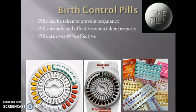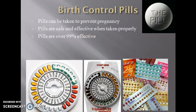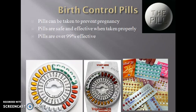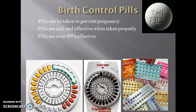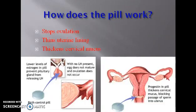Let's look at birth control pills. Birth control pills can be taken to prevent pregnancy, and they are very safe and very effective when taken properly. Pills are over 99% effective, and they must be taken in a cycle regularly — take it every day.